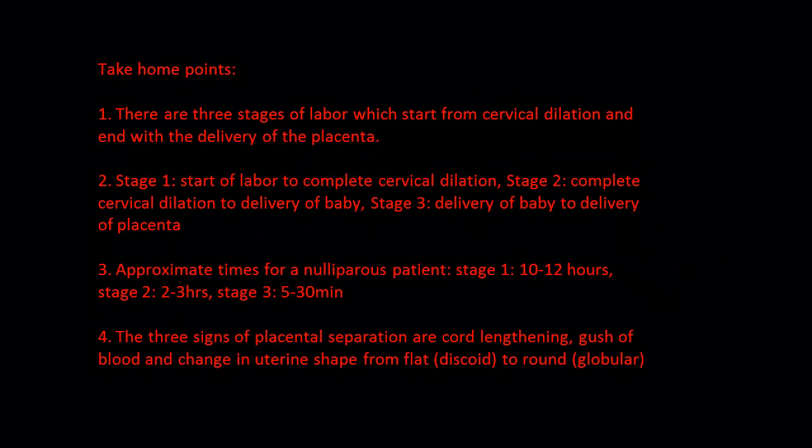Now take home points. There are three stages of labor which start from cervical dilation and end with the delivery of the placenta. Stage 1, start of labor to complete cervical dilation. Stage 2, complete cervical dilation to delivery of baby. Stage 3, delivery of baby to delivery of placenta. Approximate times for a nulliparous patient is stage 1, 10 to 12 hours. Stage 2, 2 to 3 hours. Stage 3, 5 to 30 minutes. And finally, the three signs of placental separation are cord lengthening, gush of blood, and change in uterine shape from flat, discoid, to round and globular. Thank you.